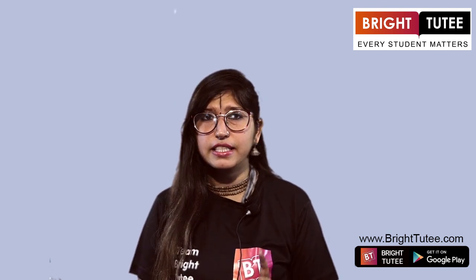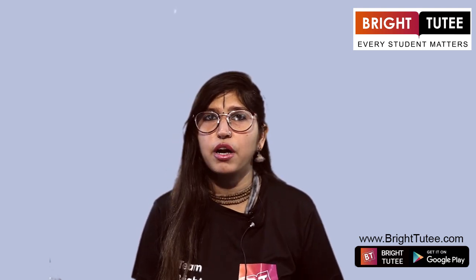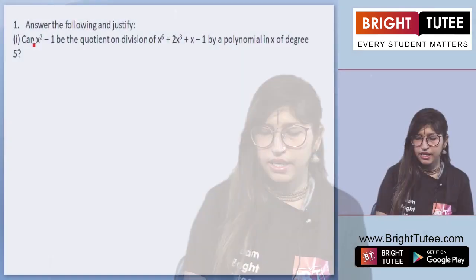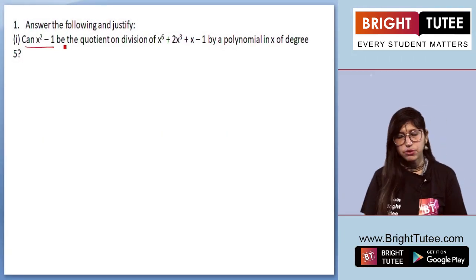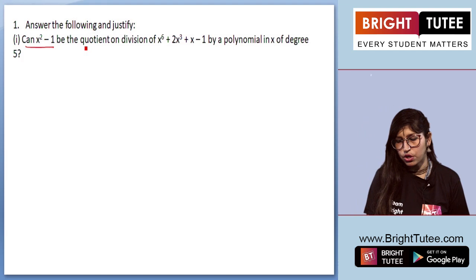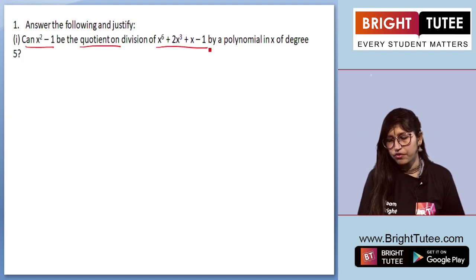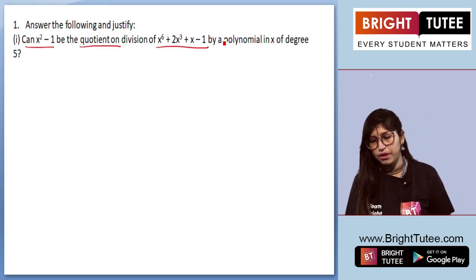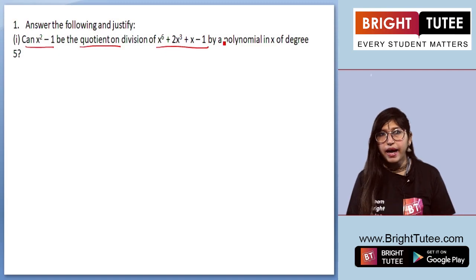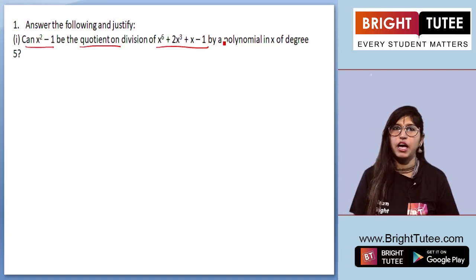We'll be starting with our first question of the second exercise and we will be discussing the first part of it. The question says: Can x square minus 1 be the quotient on division of x to the power 6 plus 2x cube plus x minus 1 by a polynomial in x of degree 5?